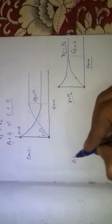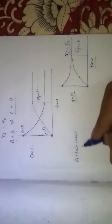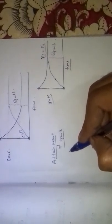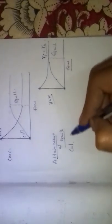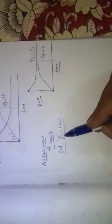The attainment of equilibrium state can be identified by the constancy of color, pressure, concentration, and so on. The constancy of these properties denotes the attainment of equilibrium.